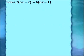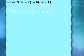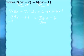Let's do one more problem together. This one uses the distributive property — we have a 7 outside the parentheses and a 6. Inside the parentheses, 5x and 2 are not like terms, so there isn't anything that can be combined. I'm going to multiply the 7 through the parentheses using the distributive property: 7 times 5x, plus 7 times negative 2, equal to 6 times 6x, plus 6 times negative 1.